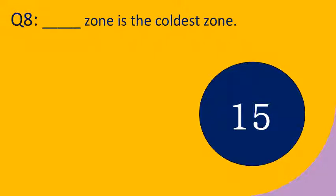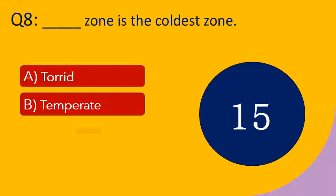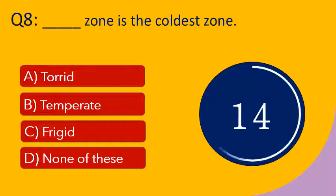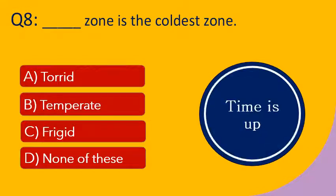Question number 8: Dash zone is the coldest zone. Options are A. Torrid, B. Temperate, C. Frigid, and D. None of these. Your time starts now. Your time is up. The right answer is frigid. Frigid zone is the coldest zone.